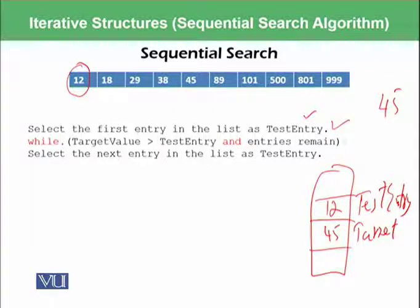So while target value is greater than test entry, so while 45 is greater than 12 and entries remain in the list, there are more entries available. Select the next entry in the list as test entry.